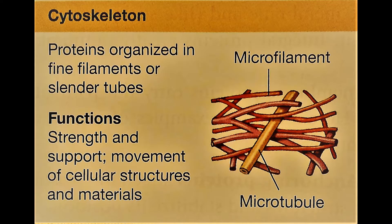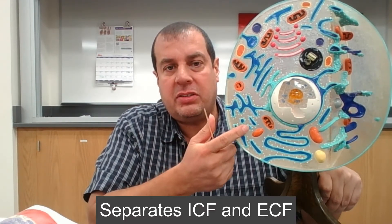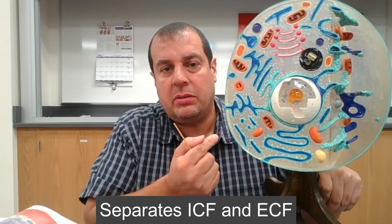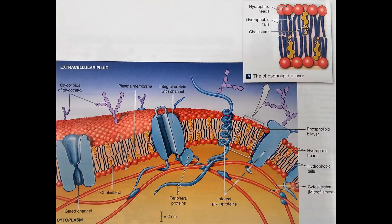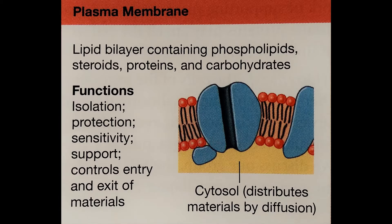The cell membrane acts like a border, separating the intracellular fluid from the extracellular fluid. It also has channels that allow certain ions to come in and others not, and it receives signals from antibodies or hormones. There is a lipid bilayer containing phospholipids, steroids, proteins, and carbohydrates. The functions of the phospholipid bilayer include isolation, protection, sensitivity, support, and controlling the entry and exit of materials.